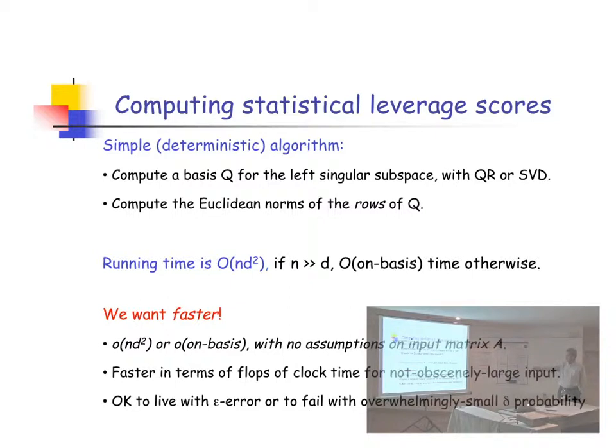We're going to want it faster. So little o of ND squared. Either faster in theory or faster in clock time. Or little o of N squared if you have a square matrix. With no assumptions whatsoever on A.